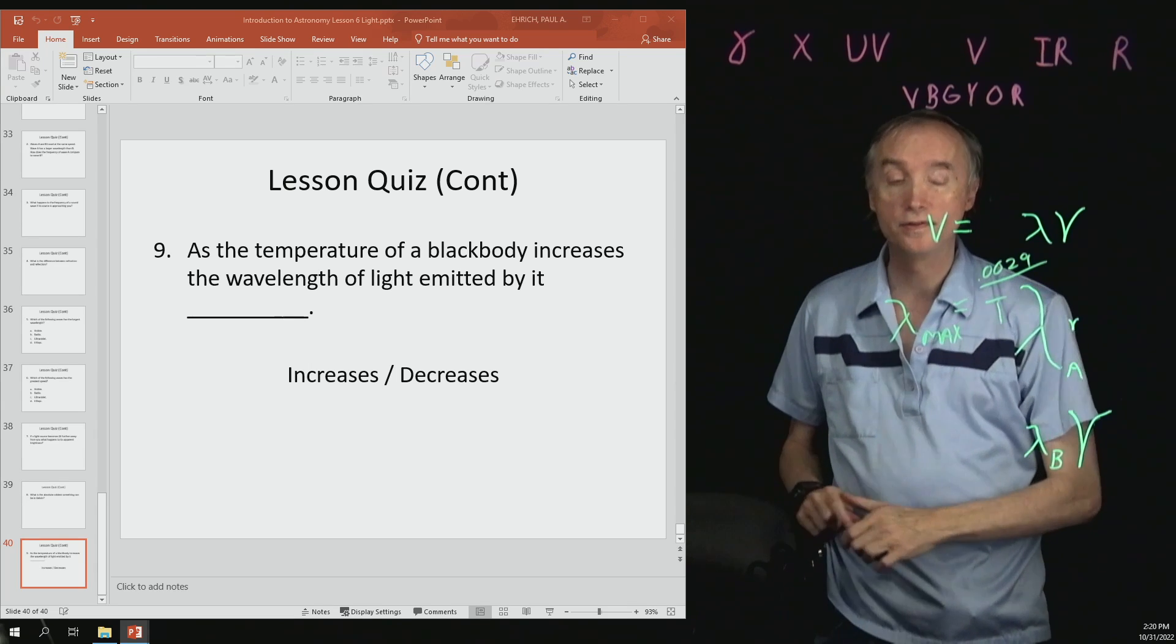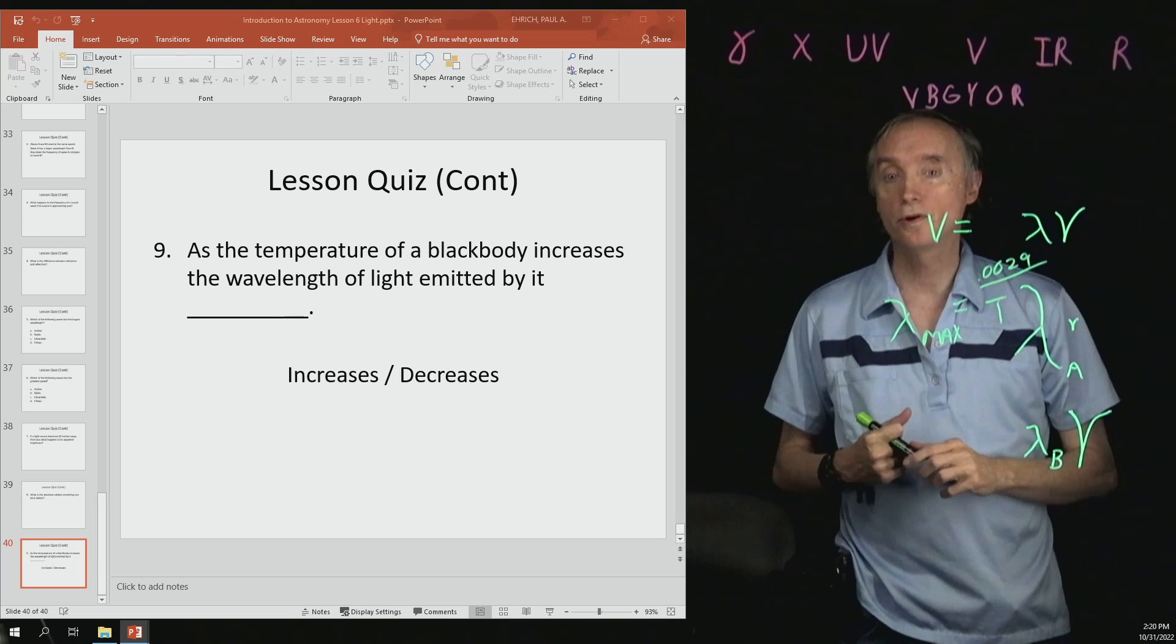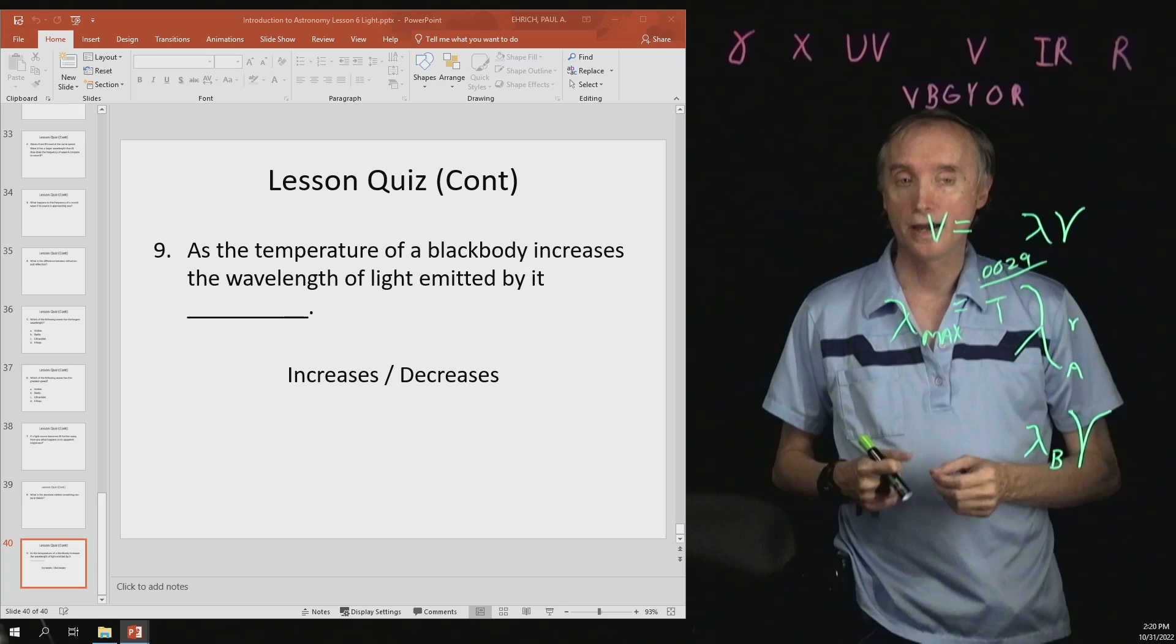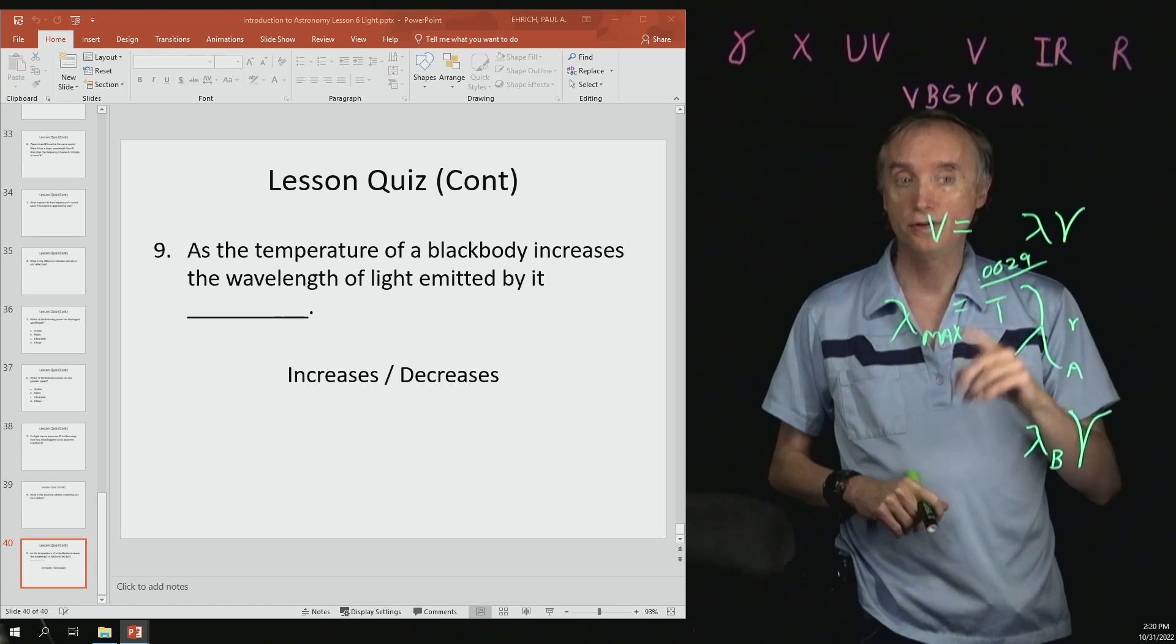And that is it. So that's it for this lesson. In the next lesson, we're going to be explaining where does the light come from. And so in order to do that, we're going to need to know about the atom. So I'll see you then.